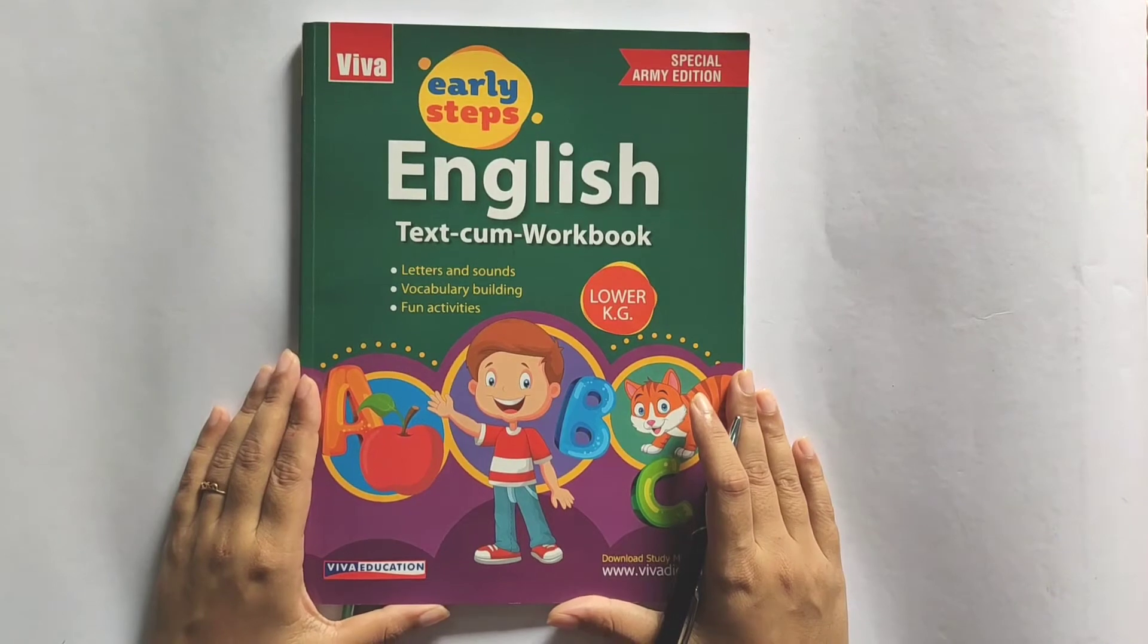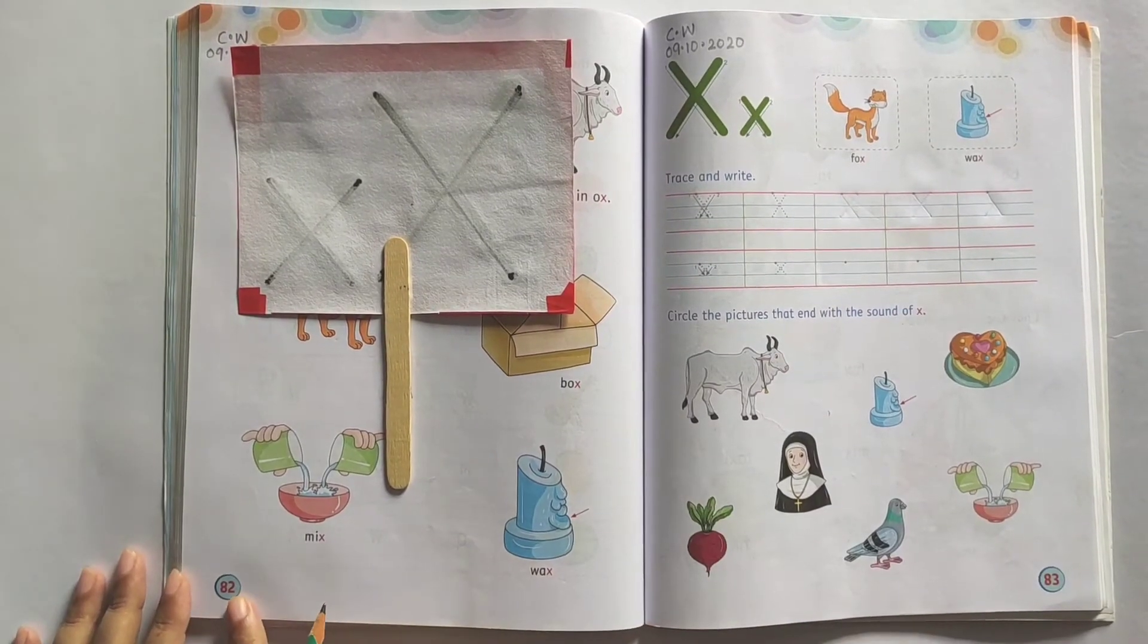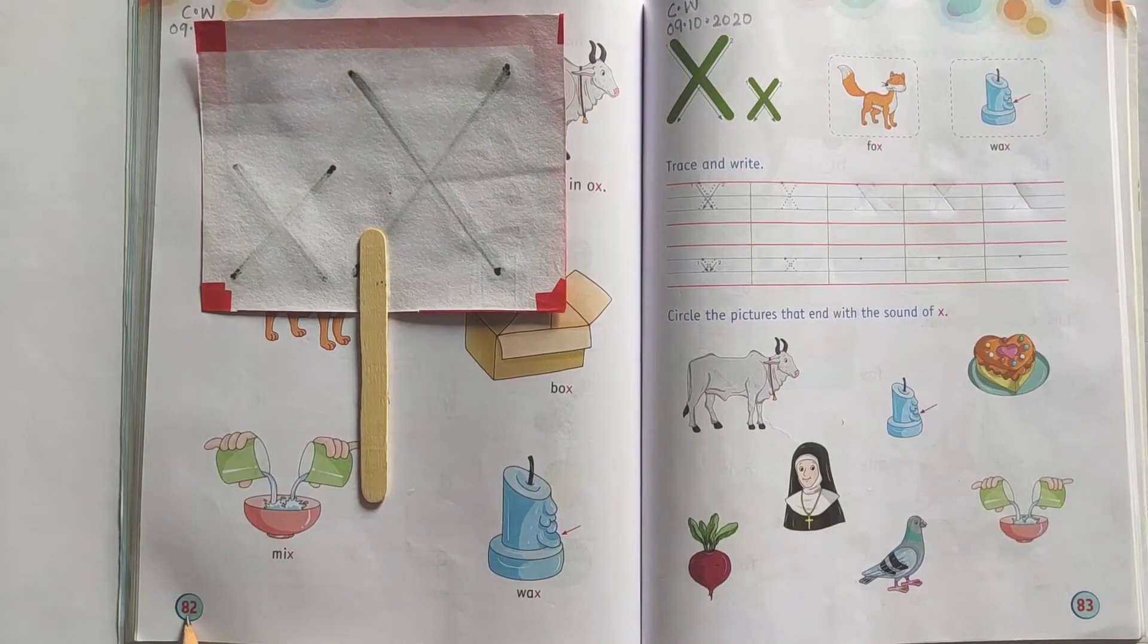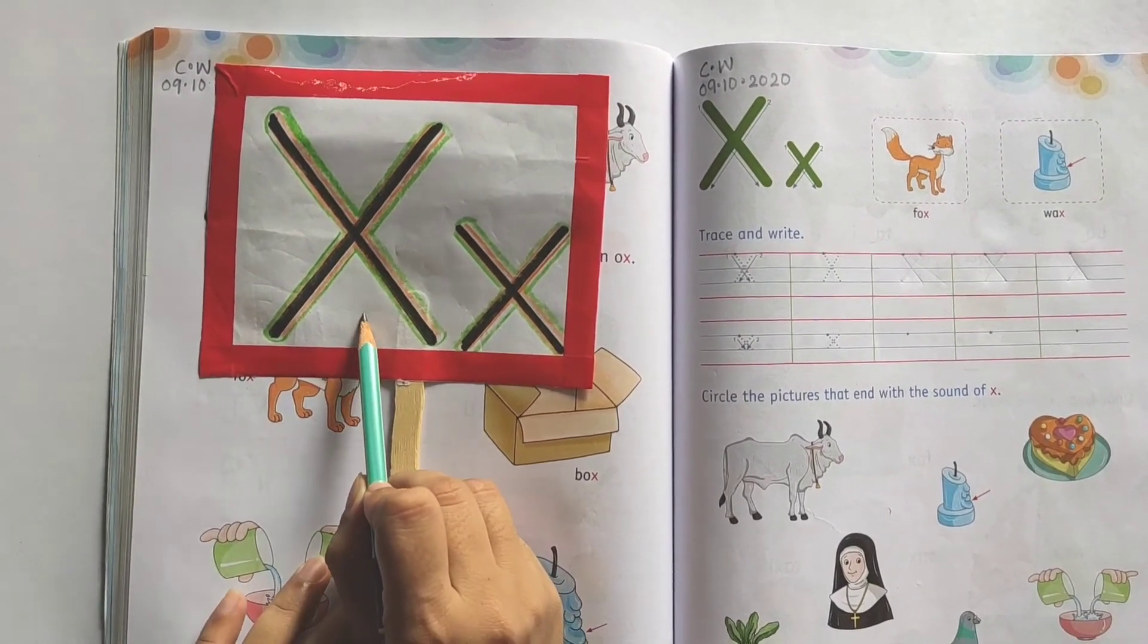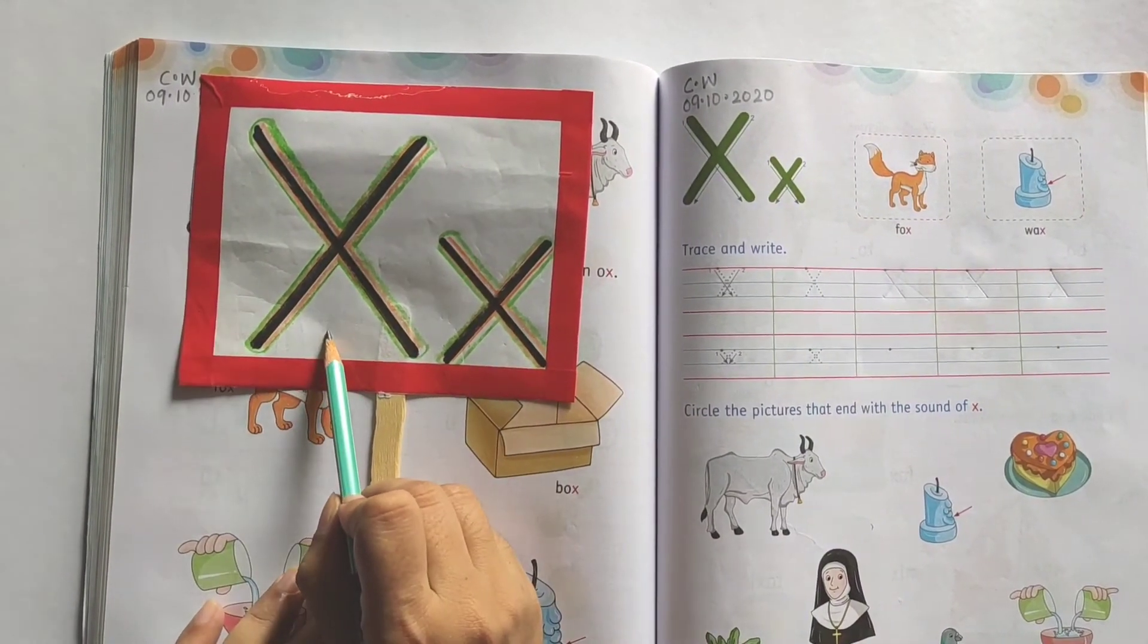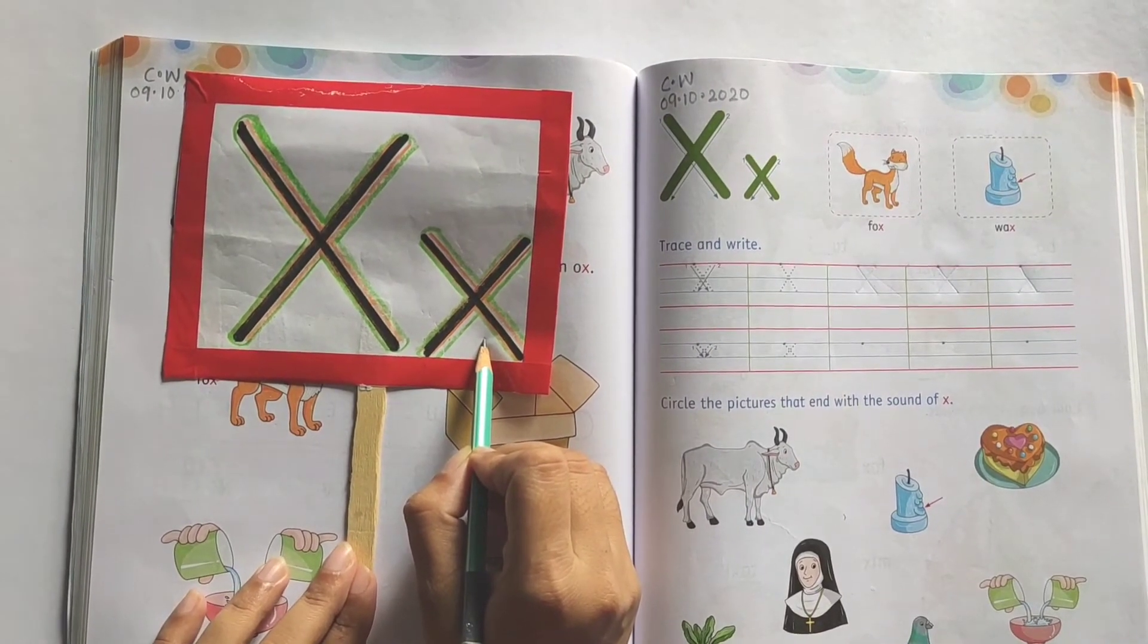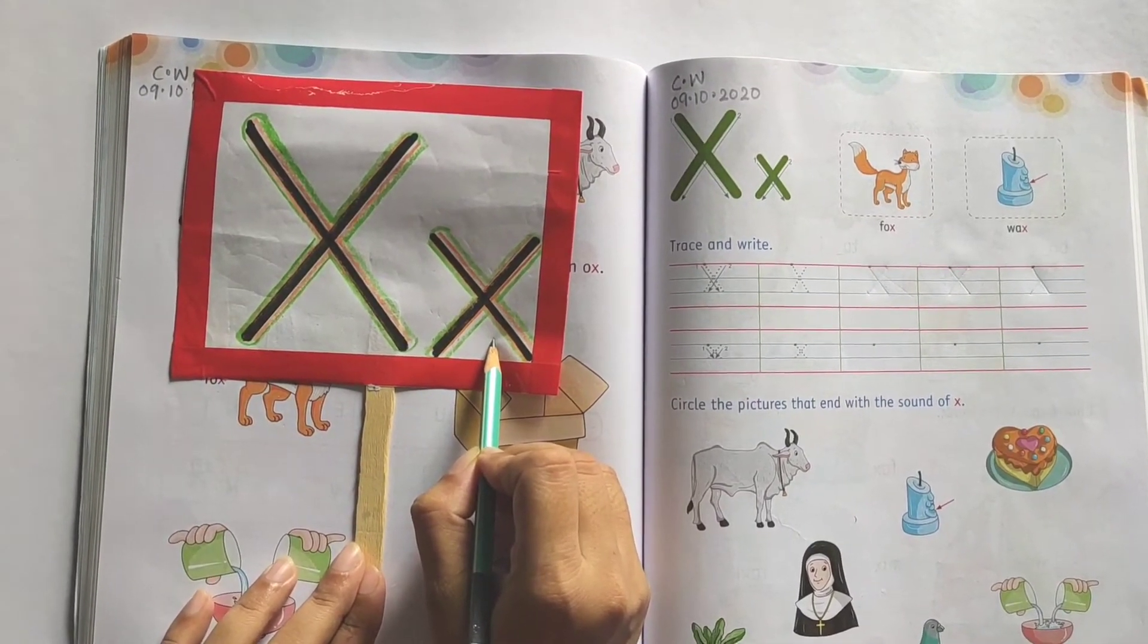Children, let us revise the letter X one more time. Take out your English verb book. Open the page number 82. Now tell me, abhi ma'am ne aapko konser letter introduce karvaya hai? That's great. Letter X. This is capital letter X and this is small letter X. And what is the sound of letter X? Good job. Kus. X says kus.